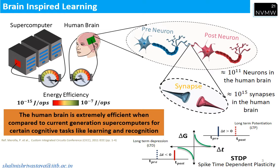If the pre-neuron spikes before the post-neuron, it is called LTP and the conductance change is positive. If the post-neuron spikes before the pre-neuron, it is called LTD and the conductance change is negative. In whole, it is called STDP — spike time dependent plasticity.